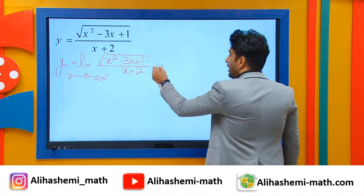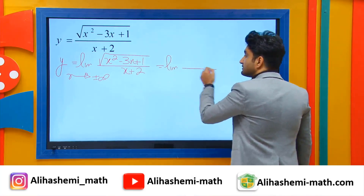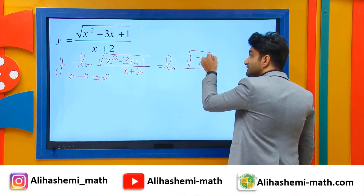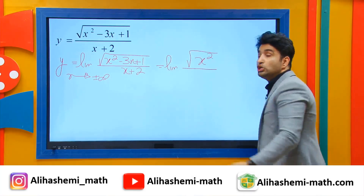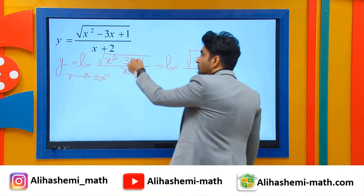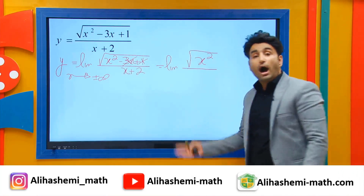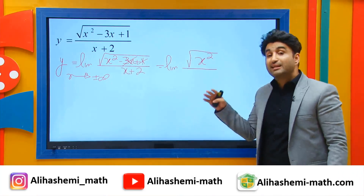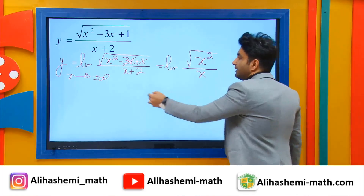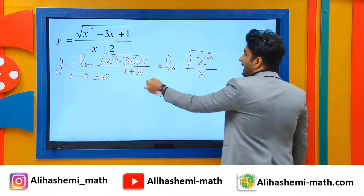So, on top, the leading term is the square root of x squared. So I can say goodbye to 3x and 1. On the bottom, the leading term is x. So again, you can cancel x.